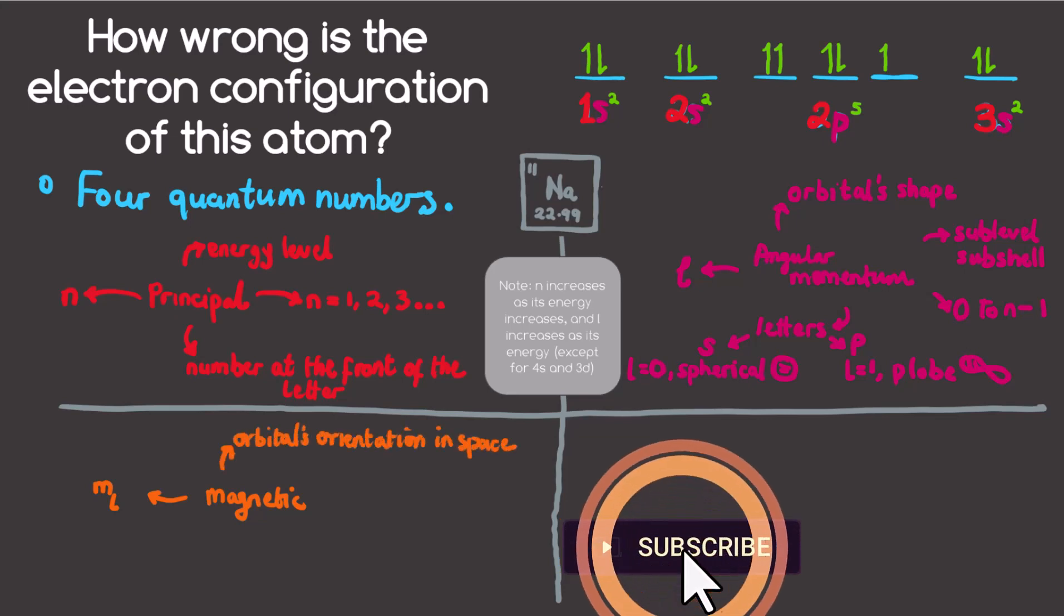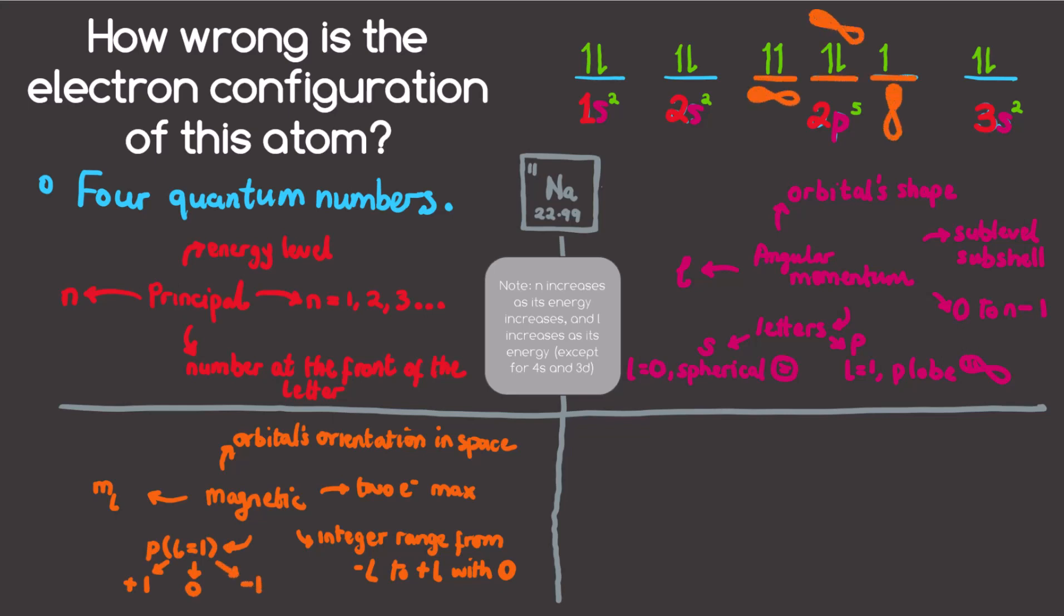This reflects the orientation of the orbital in space. There must be a maximum of two electrons in the orbital within the sub level, similar to Hund's rule. ml have integer values in the range of negative l to positive l, including zero. In this electron configuration, the s, which is where l equals zero, has one orbital represented as zero. However, the p, which is where l equals one, has three orbitals represented as positive one, zero, and negative one, as shown right over here.